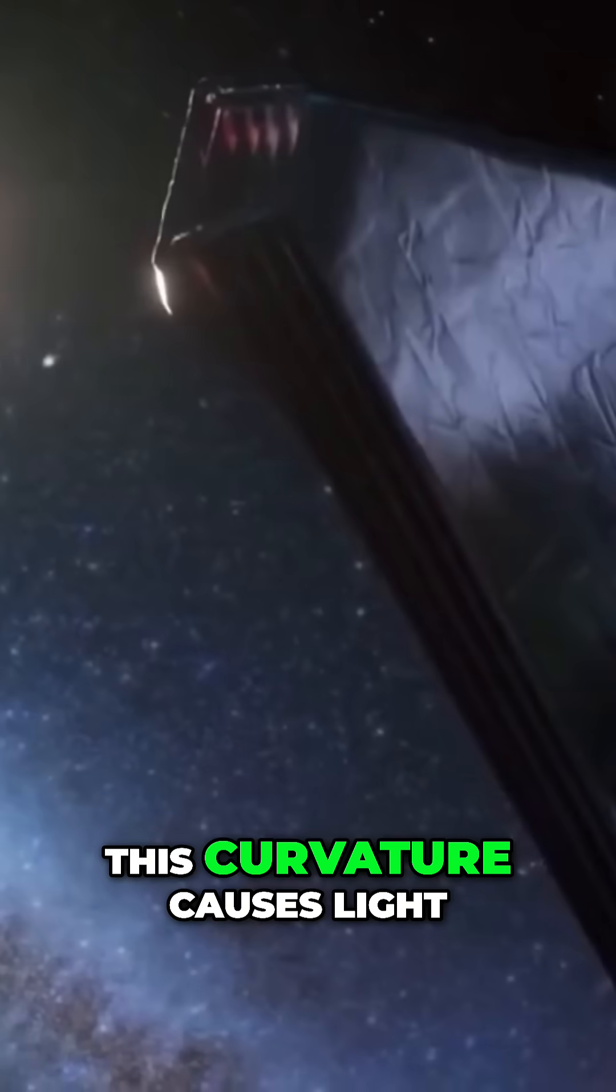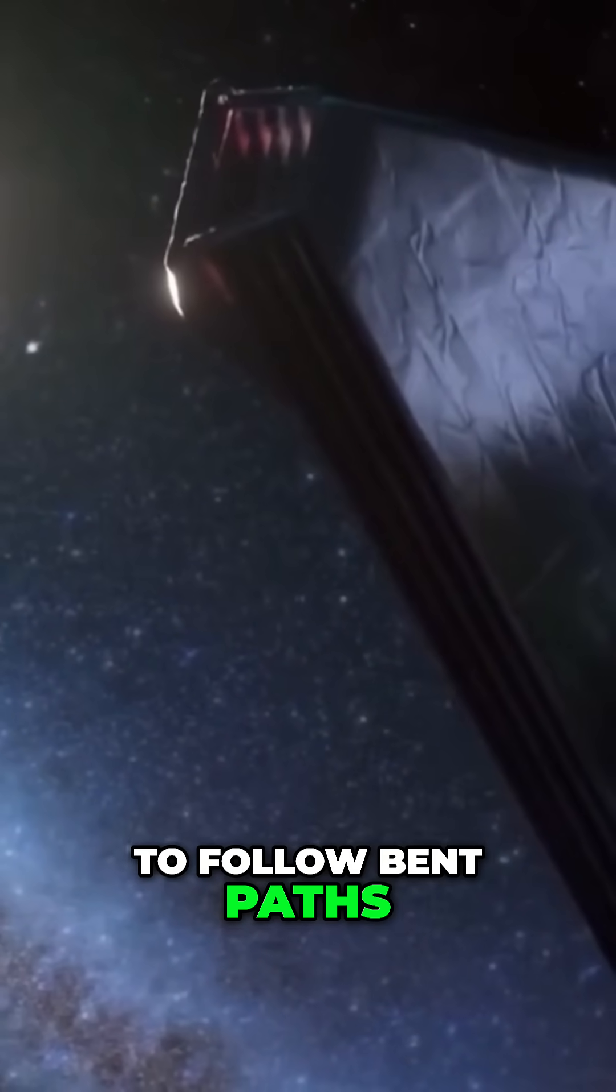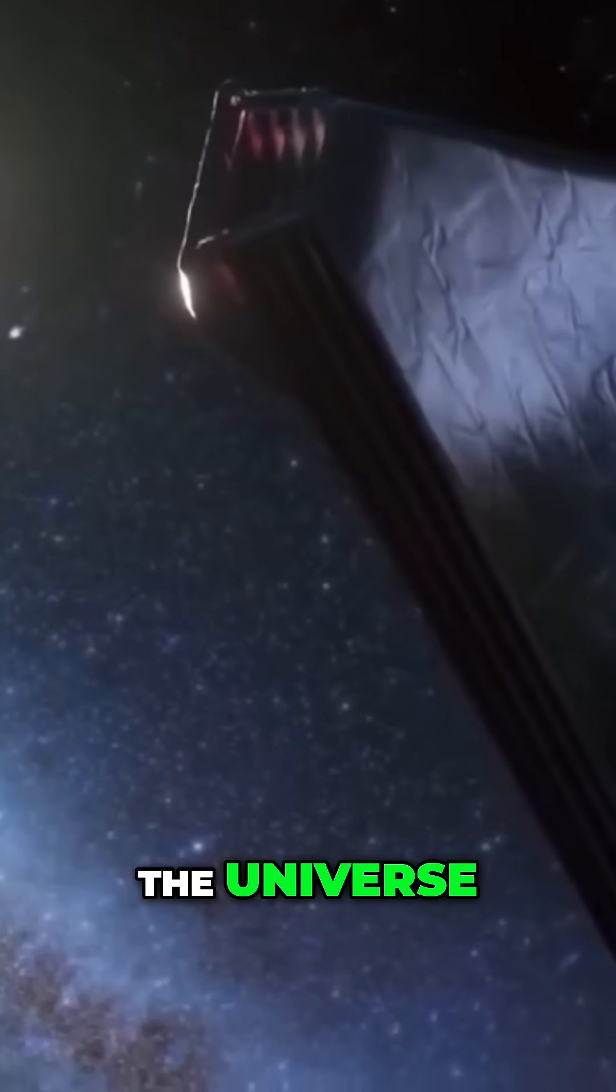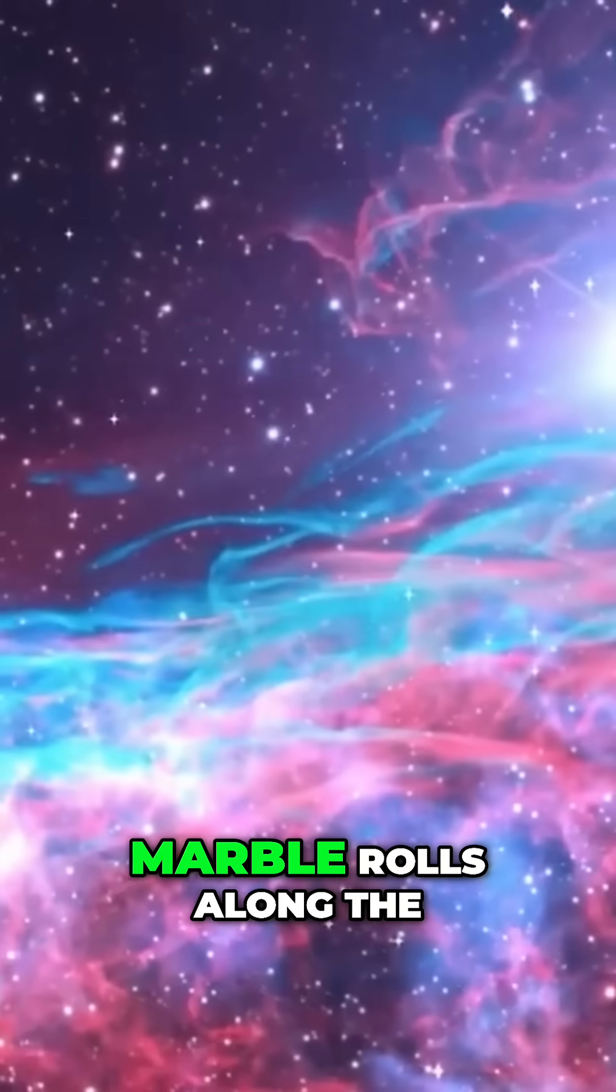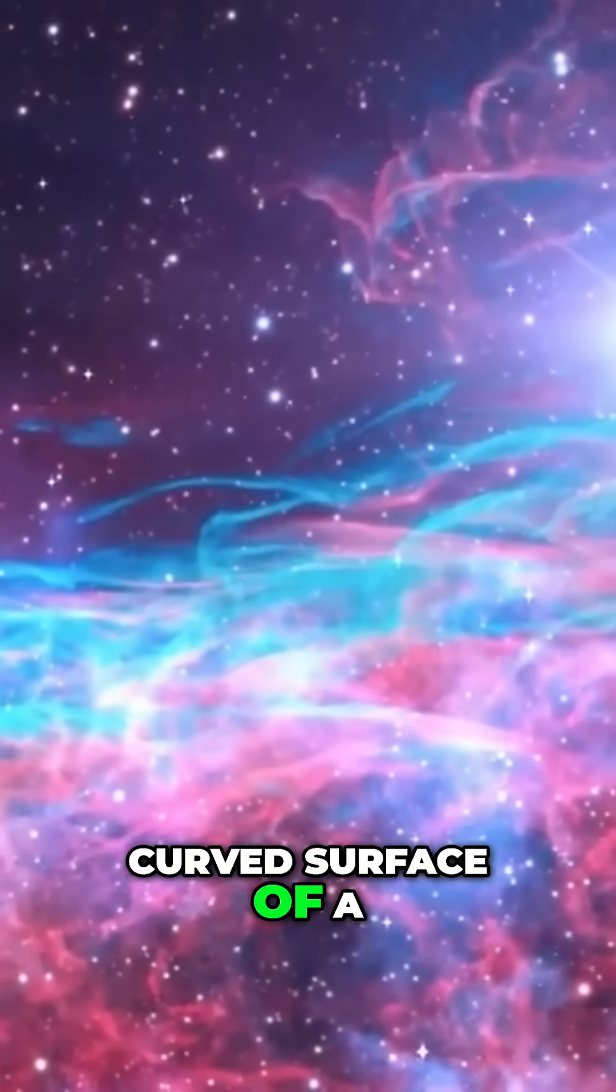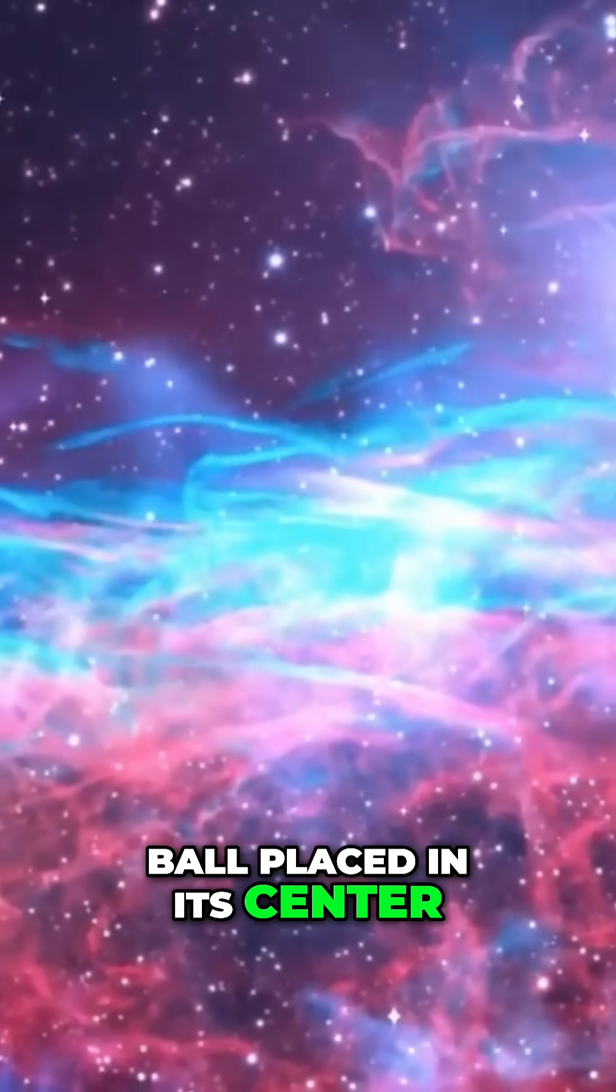This curvature causes light to follow bent paths as it travels through the universe, much like how a marble rolls along the curved surface of a trampoline with a bowling ball placed in its center.